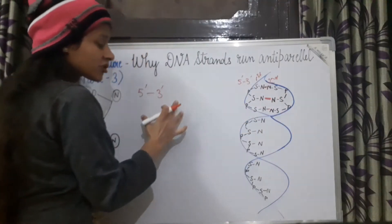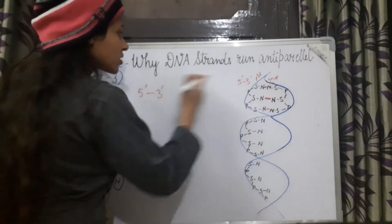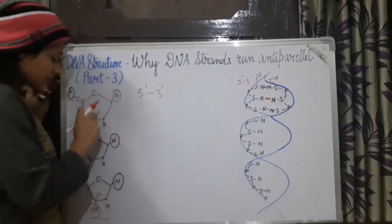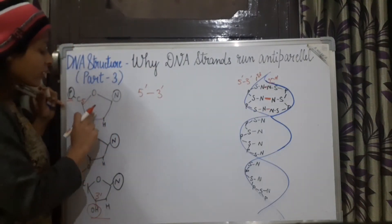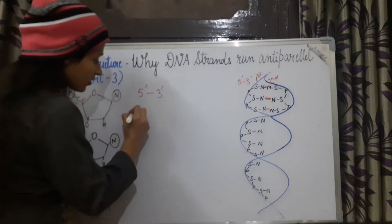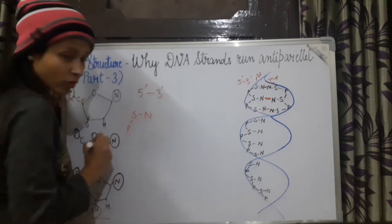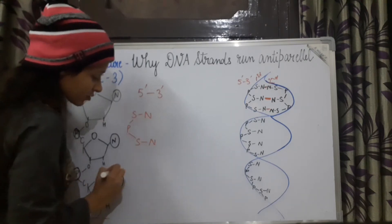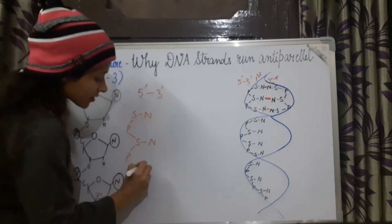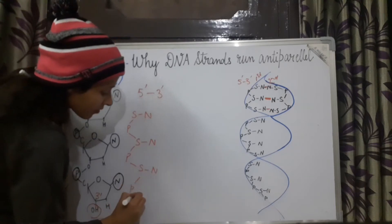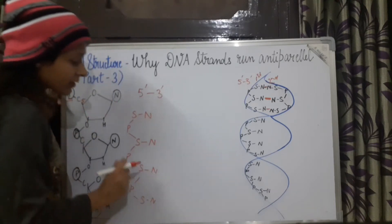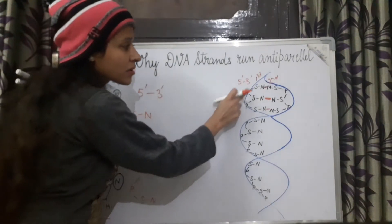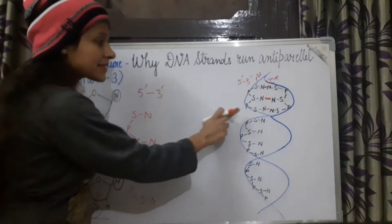So when we make this structure, let's see. We have learned to make the first DNA strand structure. This is the polynucleotide chain — there is a sugar, a nitrogenous base, and a phosphate. Then the phosphate joins another sugar and nitrogenous base, and so on. This is our one polynucleotide chain, that is the first DNA strand.